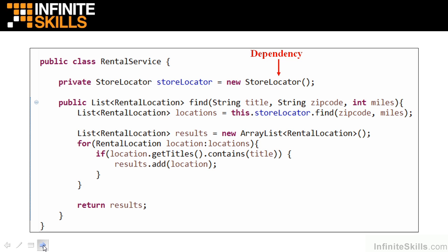the StoreLocator is used to identify rental locations where a particular title is available. Since the RentalService class directly instantiates the StoreLocator field, it is tightly coupled to the StoreLocator class. We refer to this as a dependency.